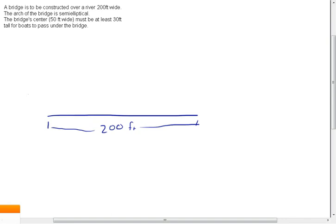Then we have a bridge to be constructed with an arch that's semi-elliptical that spans this massive river. So it looks something like that.